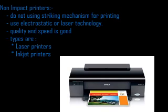The second type of printer is the non-impact printer. It does not use a striking mechanism for printing. Unlike impact printers where metal pins strike an inked ribbon, non-impact printers use electrostatic or laser technology. The quality and speed of these printers are better than impact printers. Types of non-impact printers are laser printer and inkjet printer.